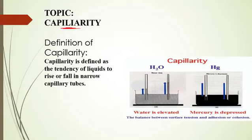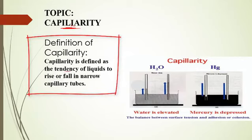At this point, let's talk about capillarity. Capillarity is simply defined as the tendency, the likelihood of liquids to rise or fall in narrow capillary tubes. What you see here is an example of a capillary tube. This is water, H2O, and this is mercury, HG. These are their nomenclatures that are given to them.